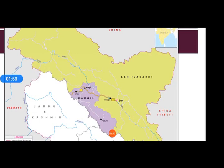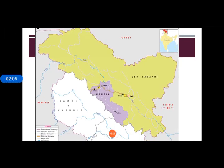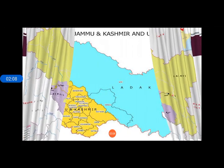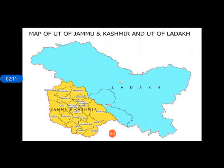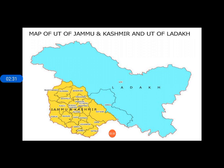Ladakh lies between the Karakoram and the Zaskar ranges, and the heights of these mountains range from 2,500 to 6,000 meters. The Karakoram range has high glaciated mountains and plateaus. Ladakh is enclosed by the Karakoram range in the north and Zaskar mountains in the south. The total area of Ladakh is about 45,100 square kilometers.